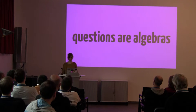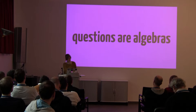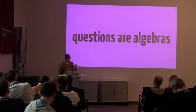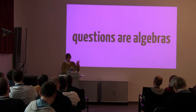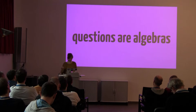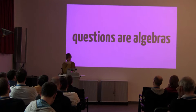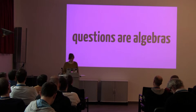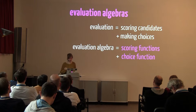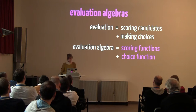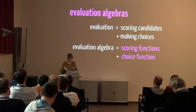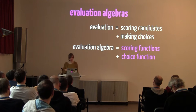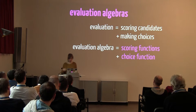My favorite part: questions are algebras. Imagine we can build our search space with some magic way to describe candidates. How do we ask a question, like 'give me the maximum scoring alignment'? We can do this with evaluation algebras. Two things happen in the evaluation phase: first, the scoring of candidates, and second, the making of choices. Both are encompassed in the evaluation algebra — just a bunch of functions for scoring and one function for making the choice.